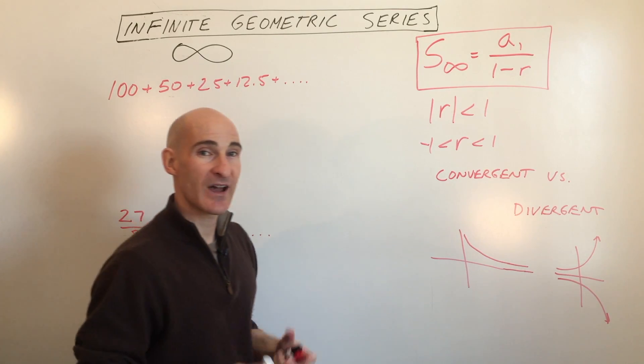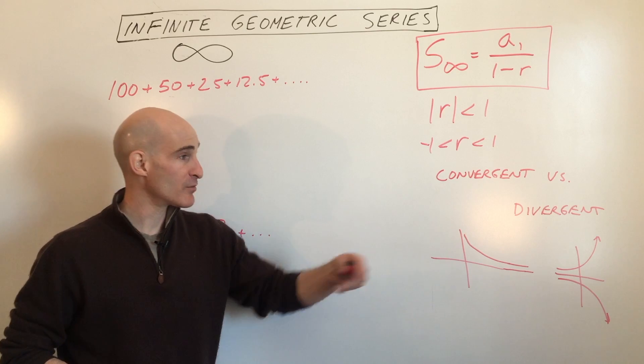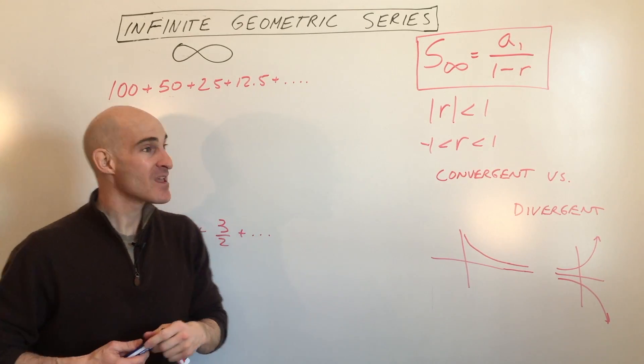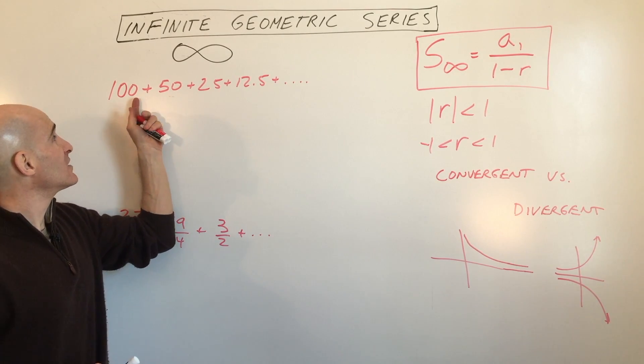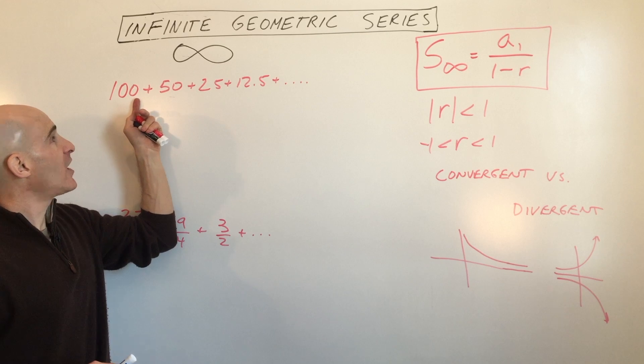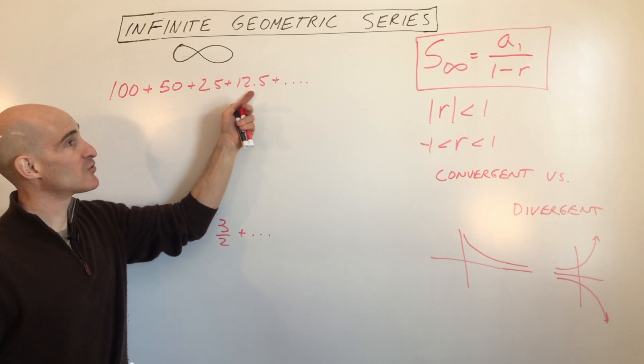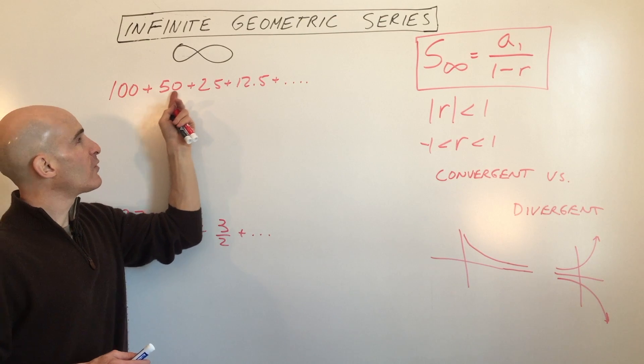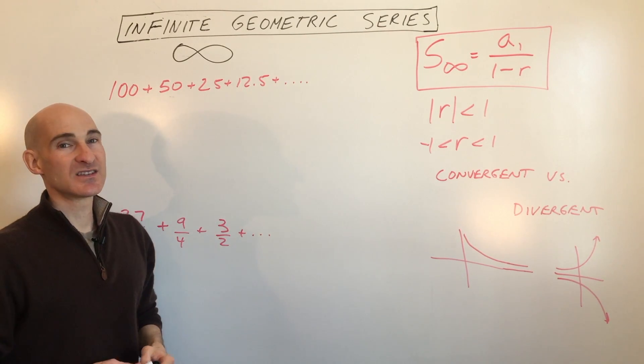You can sum up all those terms and find out what that sum is as the number of terms approaches infinity. So what we're going to do in this one is we're going to look at a couple examples. We're going to start off with 100, and the next term is 50, 25, 12.5. So what are we multiplying by to get to the next term in this series?